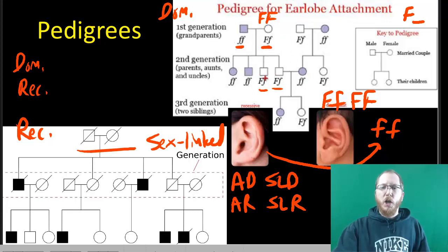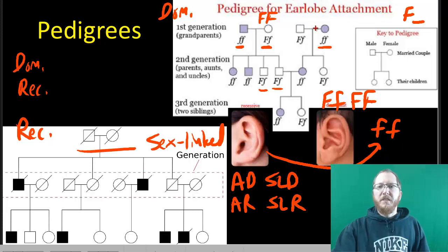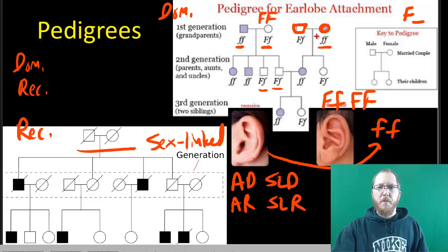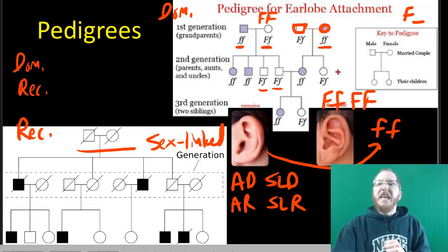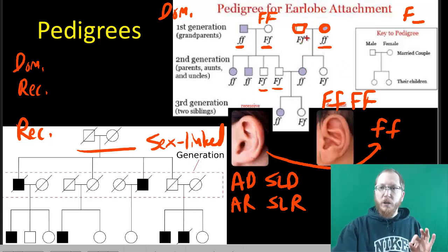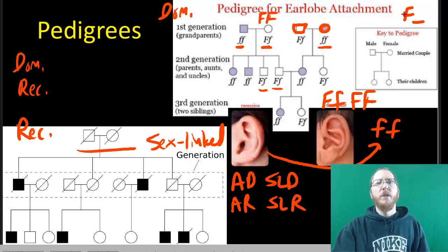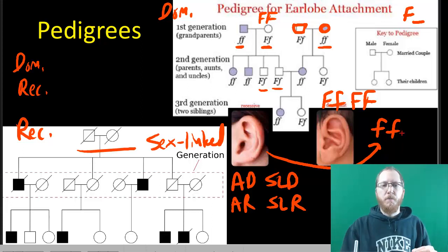By looking at pedigrees and their offspring, we can often figure out the genotypes of the parents, and if we know the parents' genotypes, we can figure out the genotypes of the offspring. Going through the pedigree, you can fill in all the genotypes because we know what's going on. If neither parent has attached earlobes but one of their kids does, I'd know immediately they must both be heterozygotes — to have an affected offspring, both parents must carry the recessive allele. If none of their kids were recessive, there's a decent chance at least one parent is homozygous dominant.